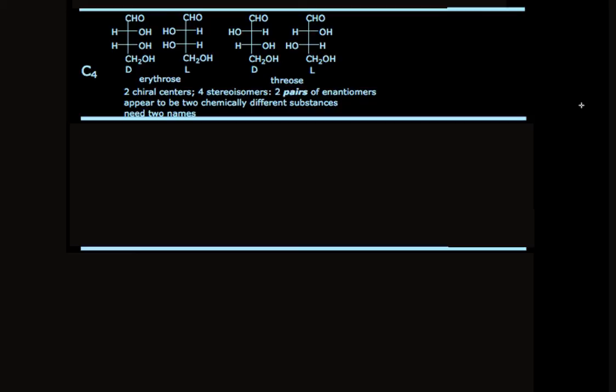So the tetroses, for instance, have two pairs of enantiomers. And in each case, the enantiomers are distinguished by defining whether the hydroxyl group is sticking to the right or to the left. The definition tells us to look at the bottom stereogenic center. If the hydroxyl group is sticking to the right, it's D. If the hydroxyl group is sticking to the left, it's L.